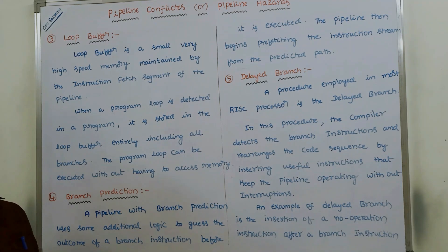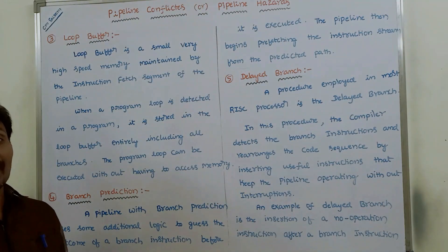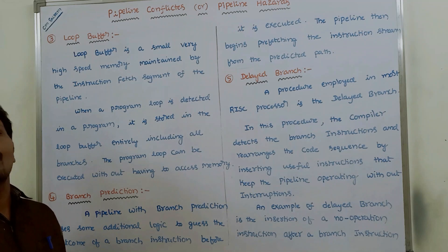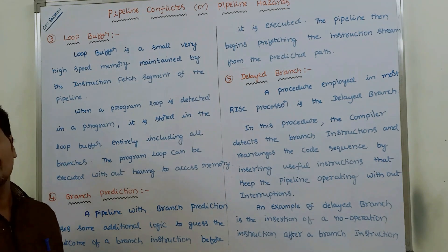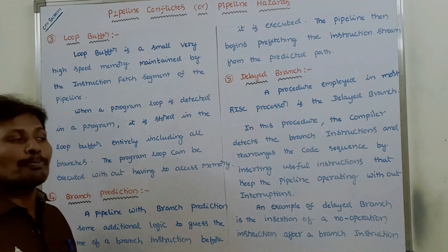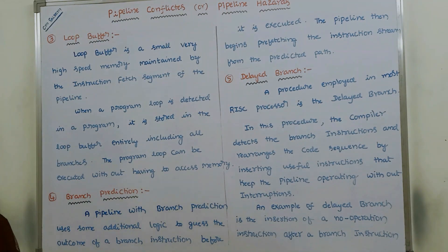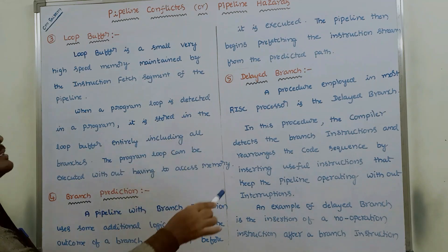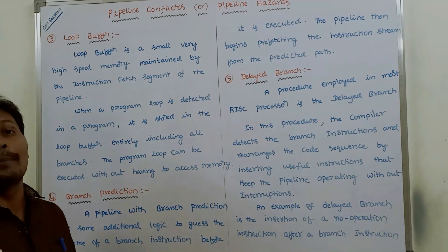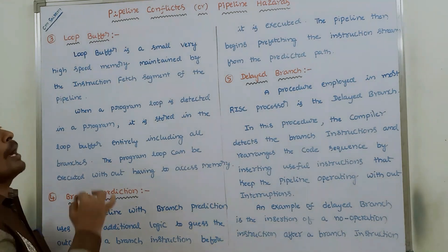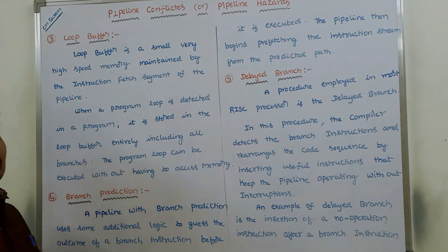In summary, to handle branch difficulties in the instruction pipeline, the five mechanisms are: pre-fetch target instruction, branch target buffer, loop buffer, branch prediction, and delayed branch. Using these five mechanisms, we handle branch instructions in the instruction pipeline.